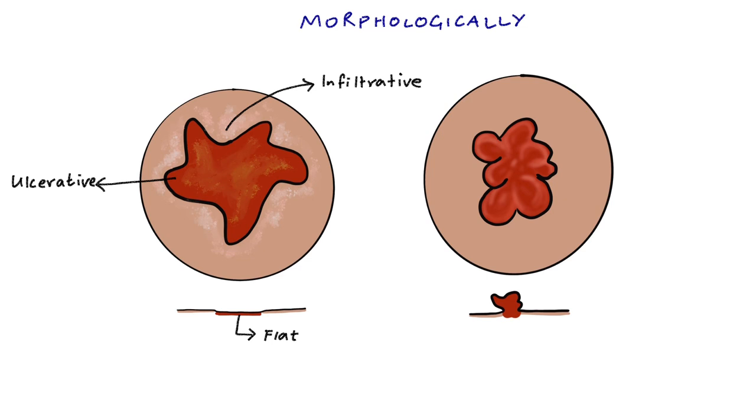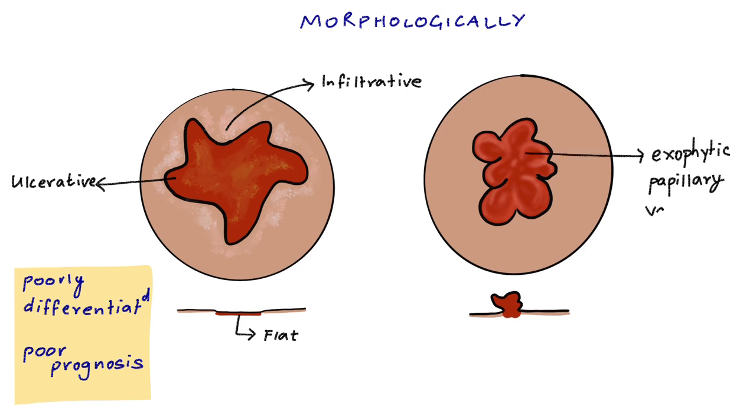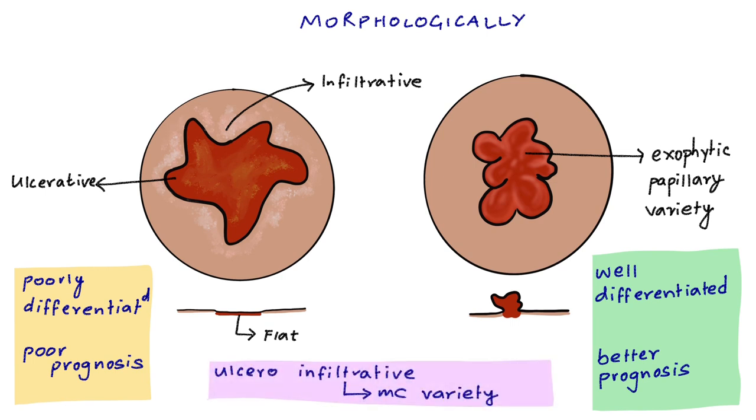These are usually poorly differentiated and carry a poor prognosis. The second variety shows exophytic papillary growth. This variety is well differentiated and has a better prognosis. The first variety which is a flat lesion and ulcero-infiltrative in nature is a more common one.